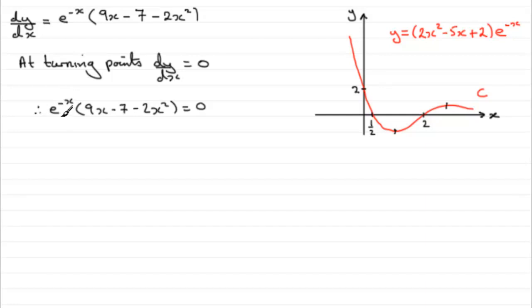I showed you earlier that the graph of e^(-x) doesn't cross the x-axis. So that means that it must be 9x minus 7 minus 2x² that equals zero. So we'll just put that in, that therefore 9x minus 7 minus 2x² must equal zero.